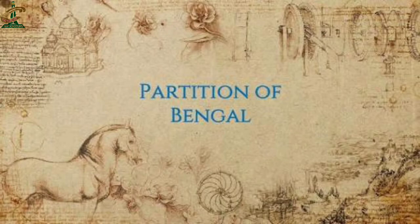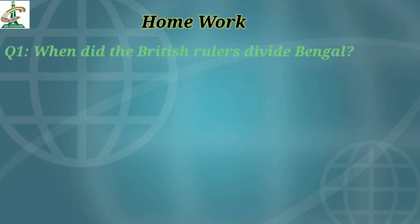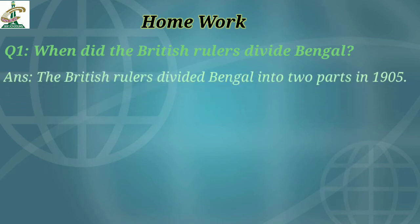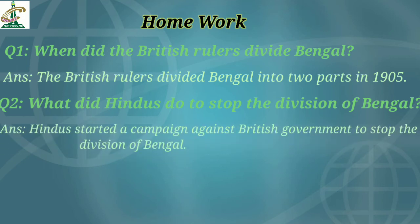Now let's move towards homework. Question number one: When did the British rulers divide Bengal? Answer: The British rulers divided Bengal into two parts in 1905. Question number two: What did Hindus do to stop the division of Bengal? Answer: Hindus started a campaign against the British government to stop the division of Bengal. These two questions are for your homework.